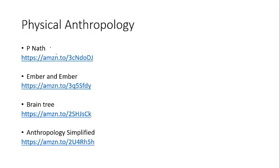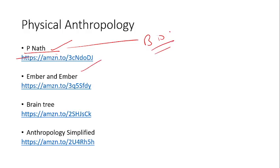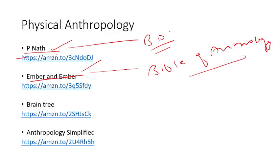The next book for physical anthropology is Peenath — this is a very good book. The biological part of physical anthropology will be completely covered by it. This is very necessary, especially for reading archaeology, the difference between primates and apes, plus all the theories we need to study, plus the genetics part. This book — Ember and Ember — is the Bible of Anthropology; I call it the Bible of Anthropology. So whoever hasn't bought it, buy it today itself. This is a very important book; keep it with you always.